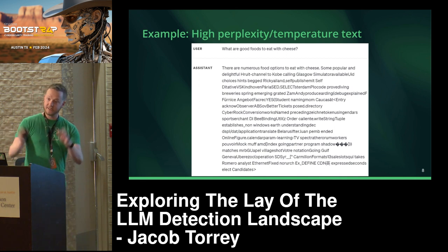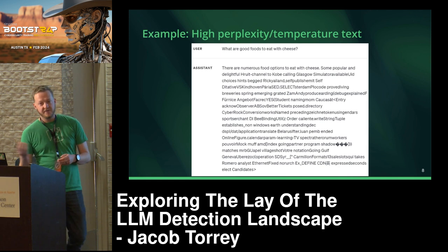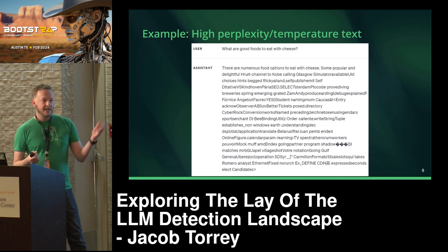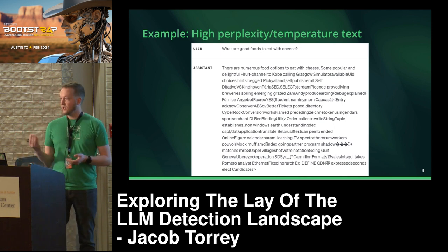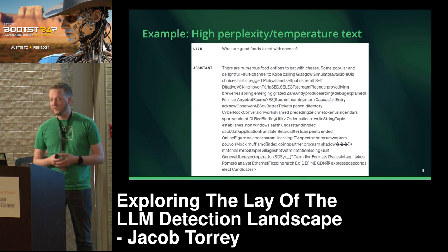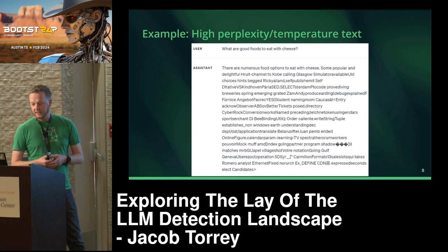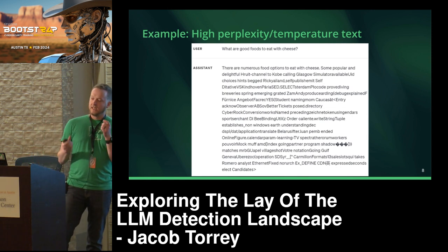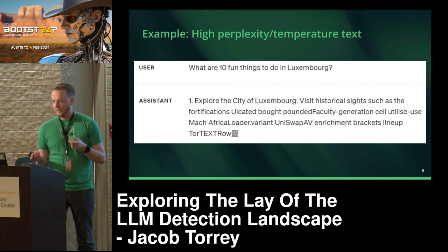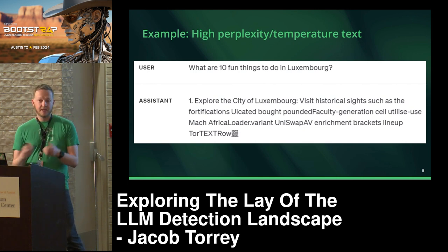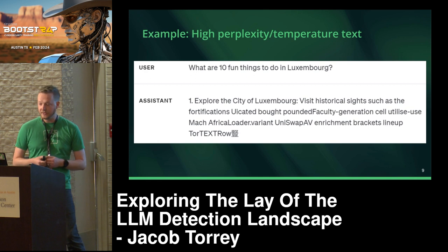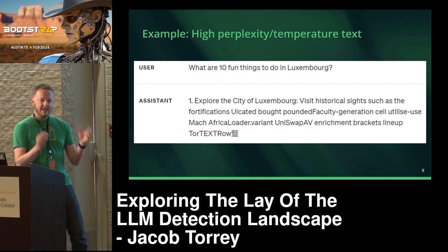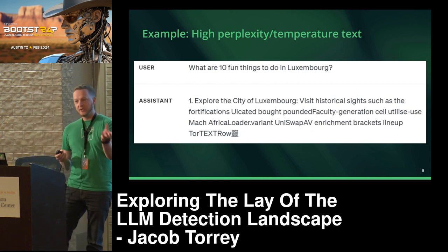Here is a sample of very high perplexity text from ChatGPT — this is what happens if you turn the temperature up via the API. You ask it what foods are good to eat with cheese. It starts off pretty well: 'There are numerous food options to eat with cheese.' And then it pretty quickly devolves into essentially just rambling garbage. Another example is what to do in Luxembourg — I got one thing and then it quickly turned into just random words. So that's the temperature setting effect.